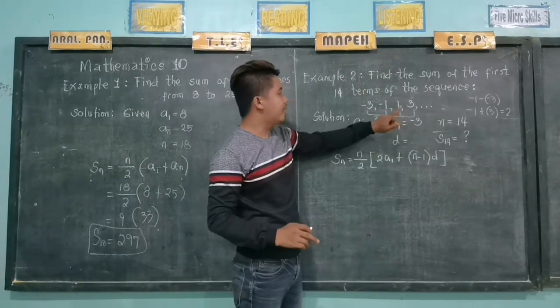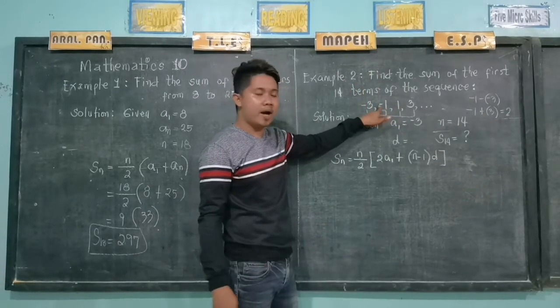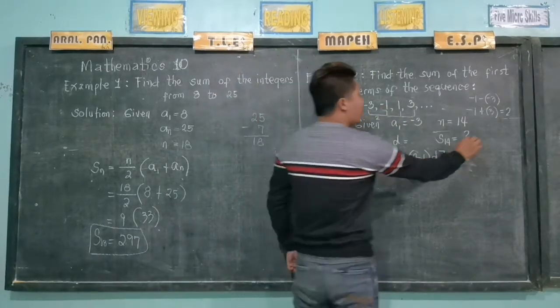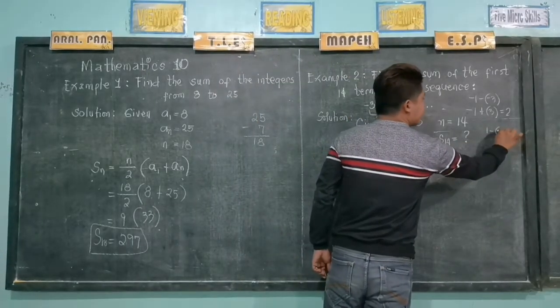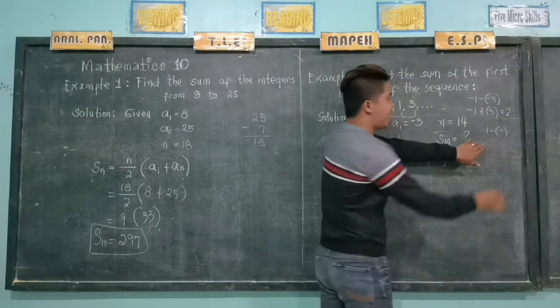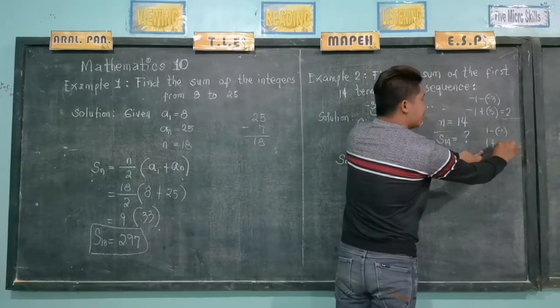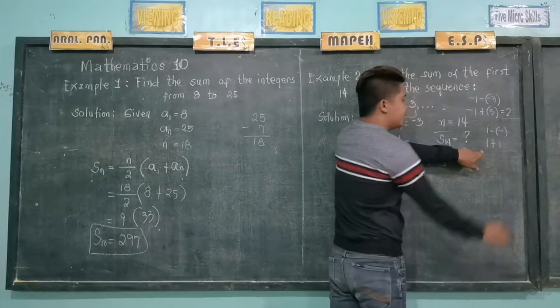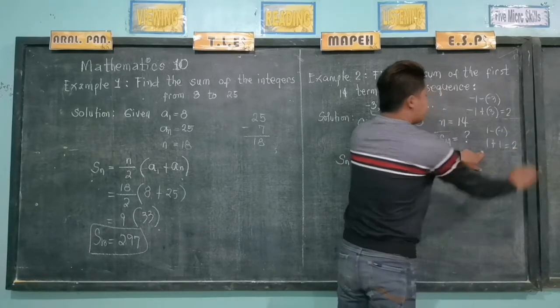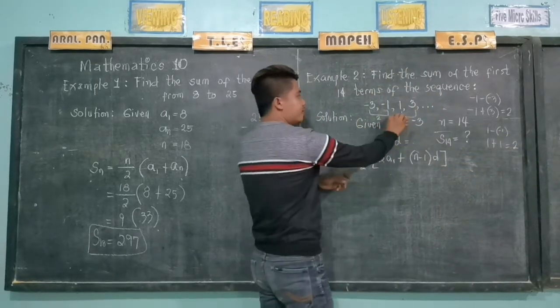Then 1 minus negative 1. Let's try 1 minus negative 1. So we'll change the sign of the subtrahend and then proceed to addition, plus 1. So therefore, this is 2. Still, we have 2.